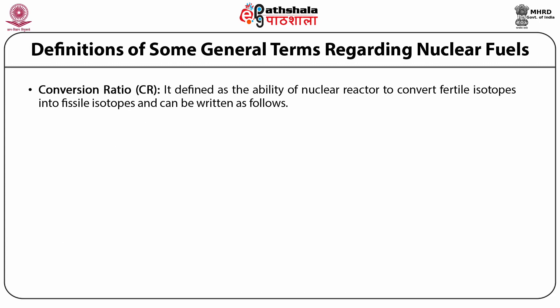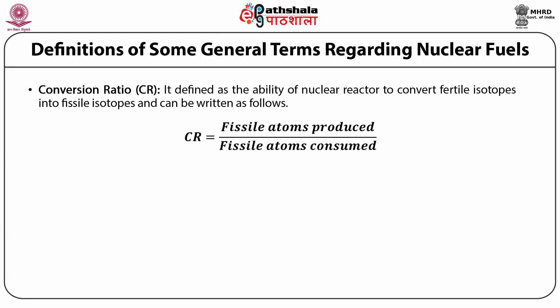Next is conversion ratio (CR): it is defined as the ability of a nuclear reactor to convert fertile isotopes into fissile isotopes, written as CR = fissile atoms produced divided by fissile atoms consumed. When CR is greater than 1, it is called the breeding ratio (BR), which is generally found in fast reactors.